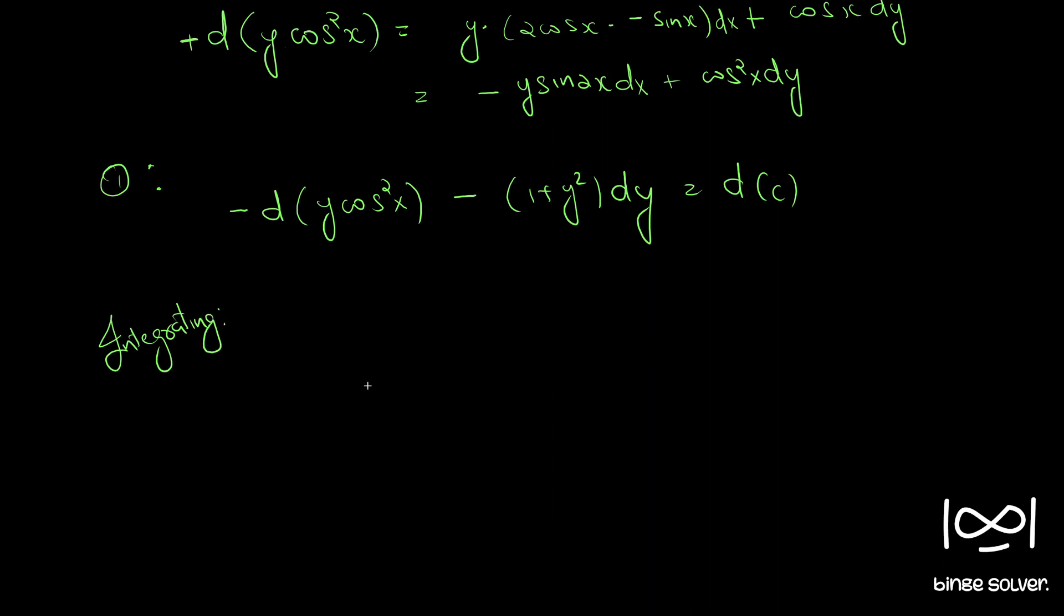we have minus y cos square x minus, differential of this is minus y, y sorry, integral of this part is y minus y cube by 3 equal to a constant.